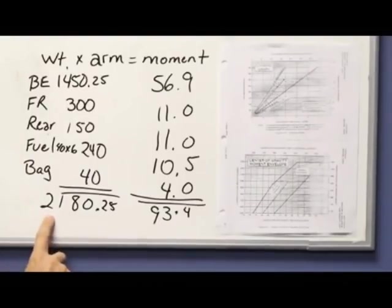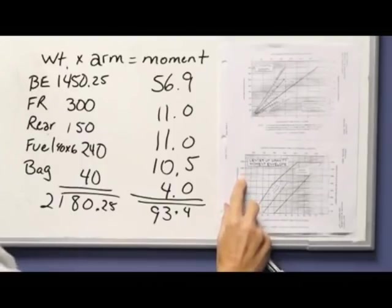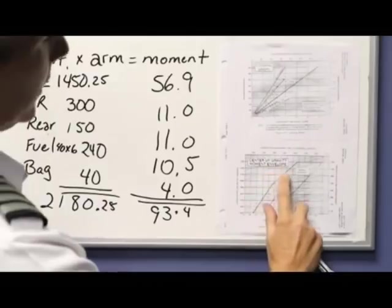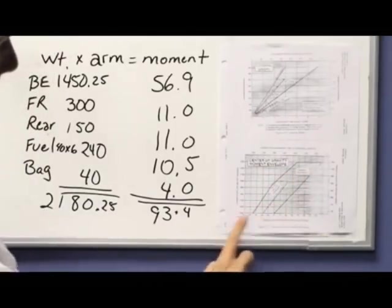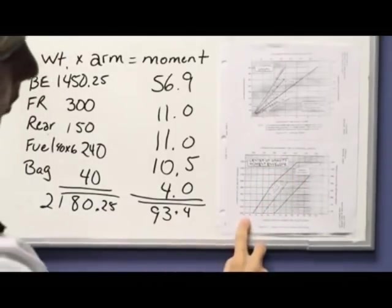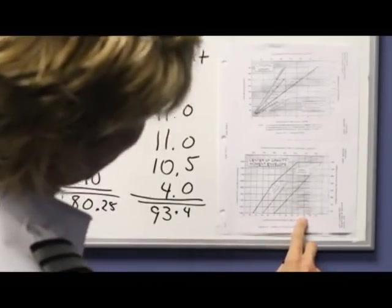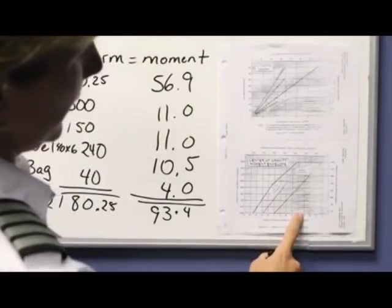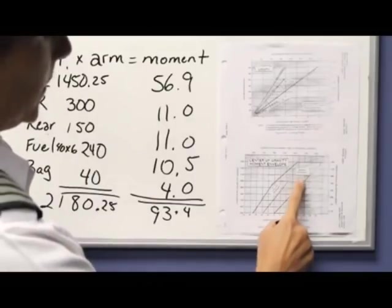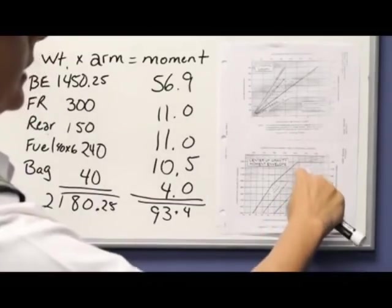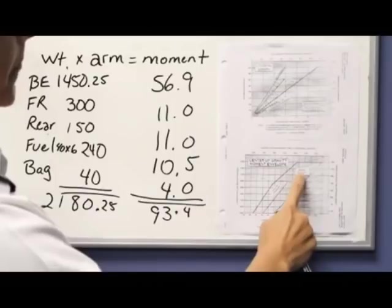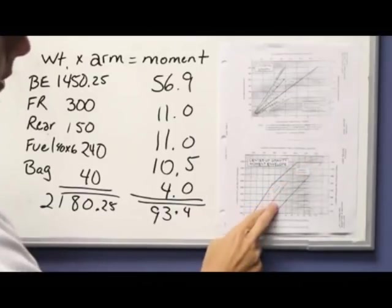Let's see if we are within the envelope. Our total weight is 2180 pounds, so I come up here—there's 2100—so I'm a little above that, and I go straight across. Then on the bottom part, my moment is 93.4. So I find 93—there's 90 and there's 95—so 93.4 is going to be about here. Then I'll go up, and wherever the two shall meet is where we are in that envelope.